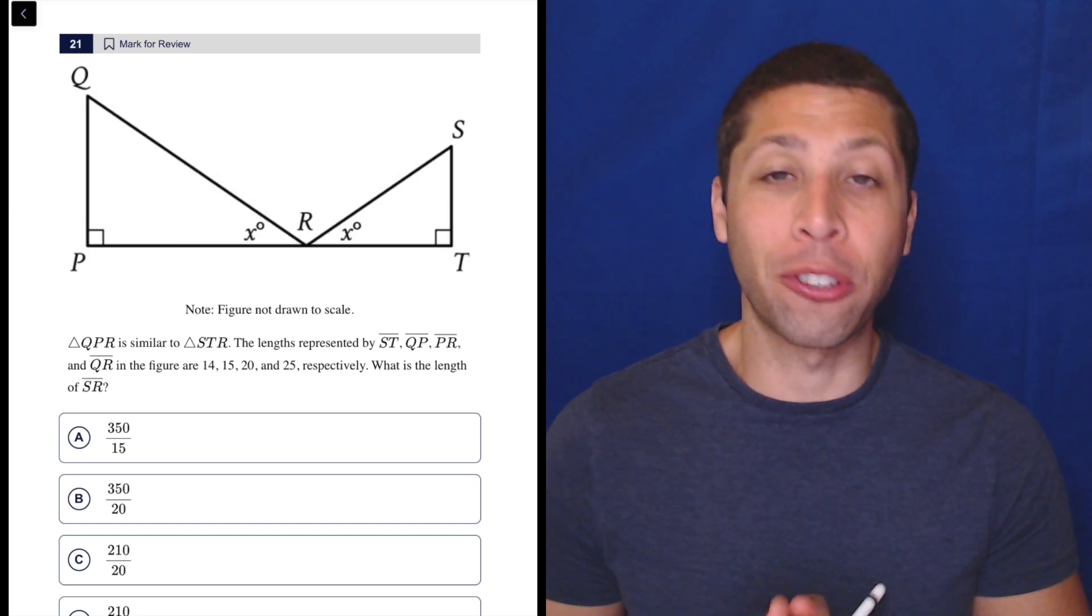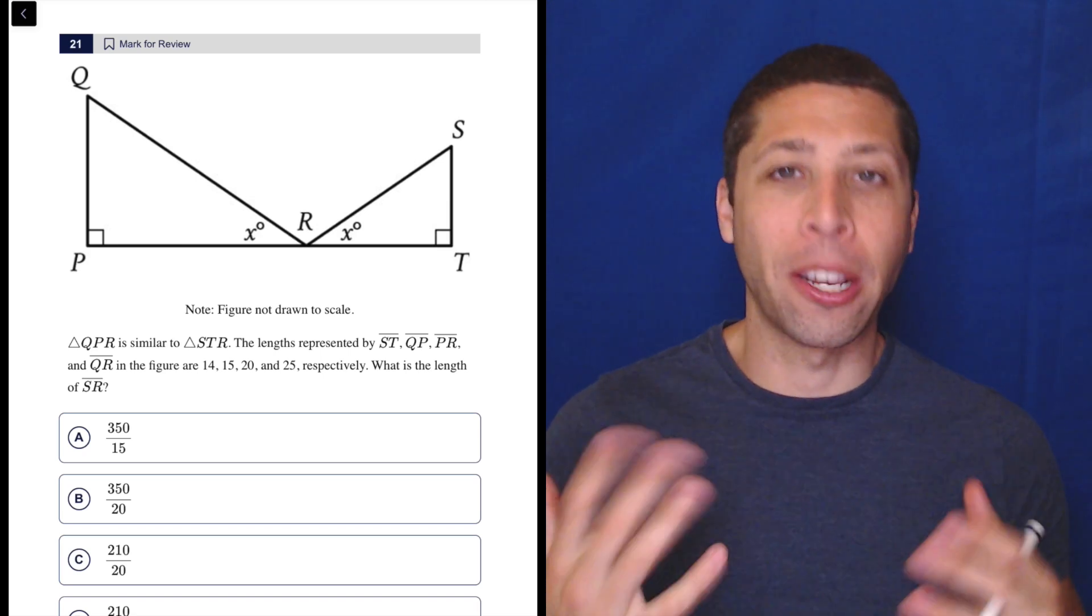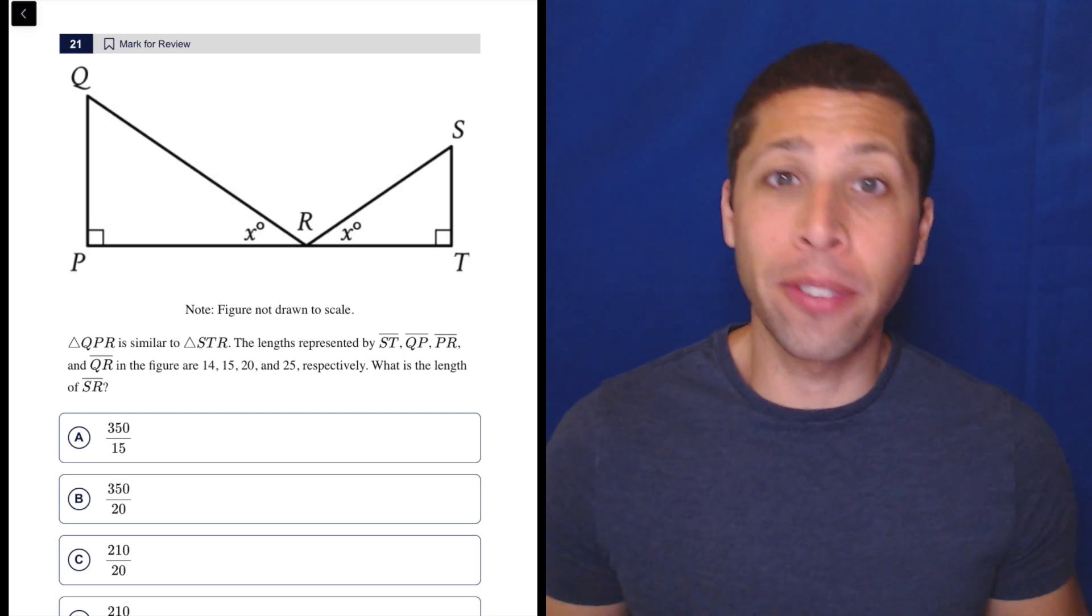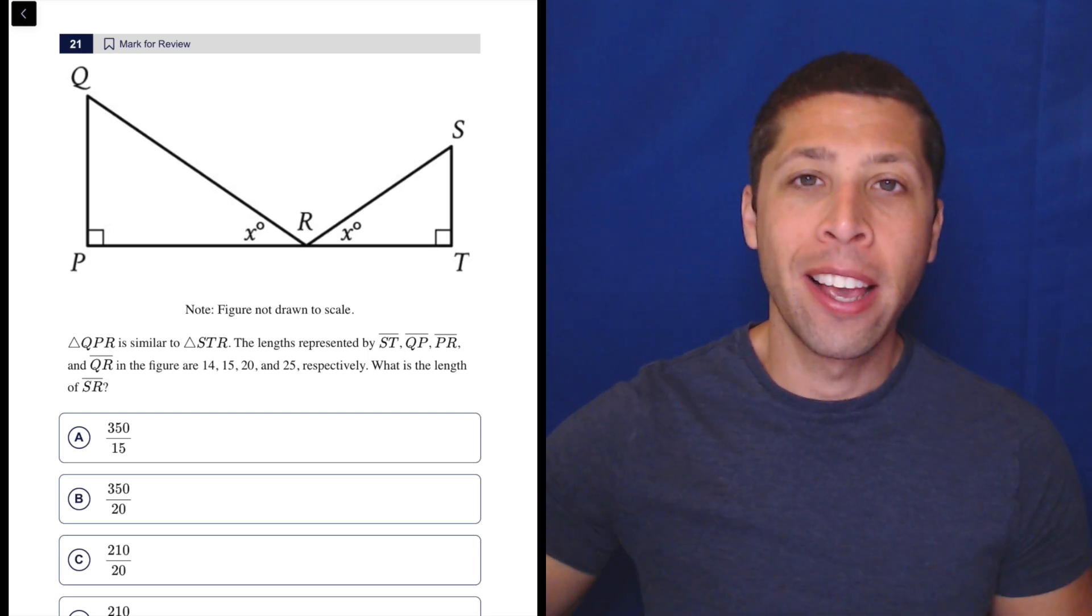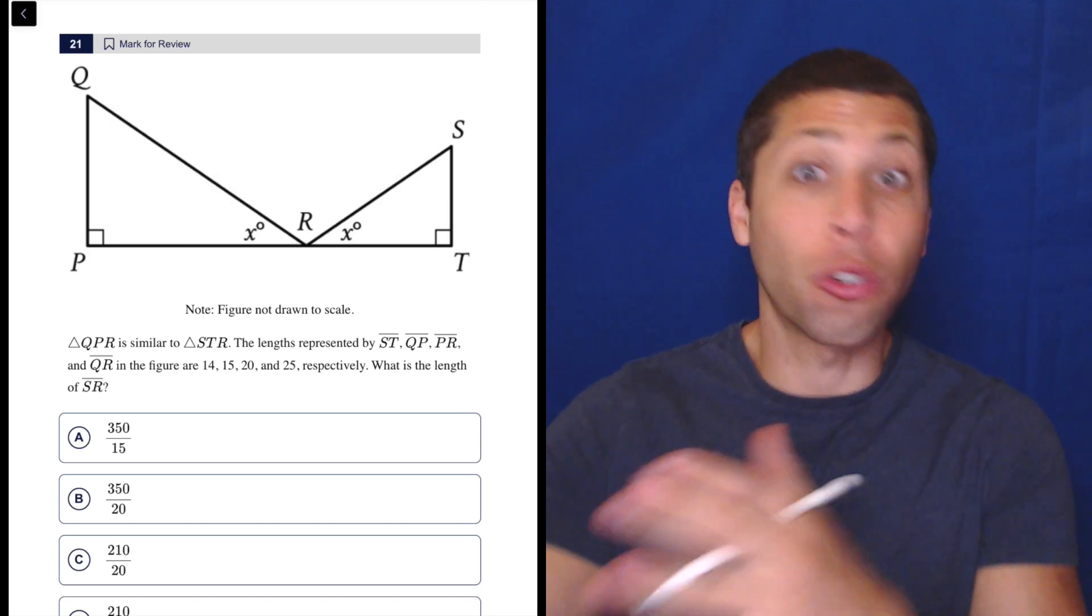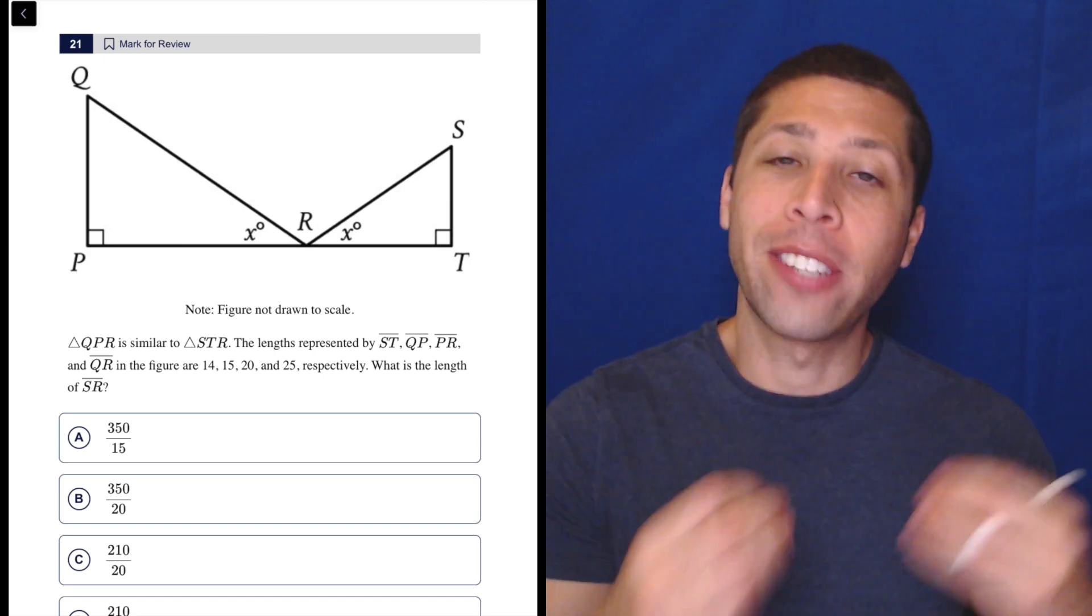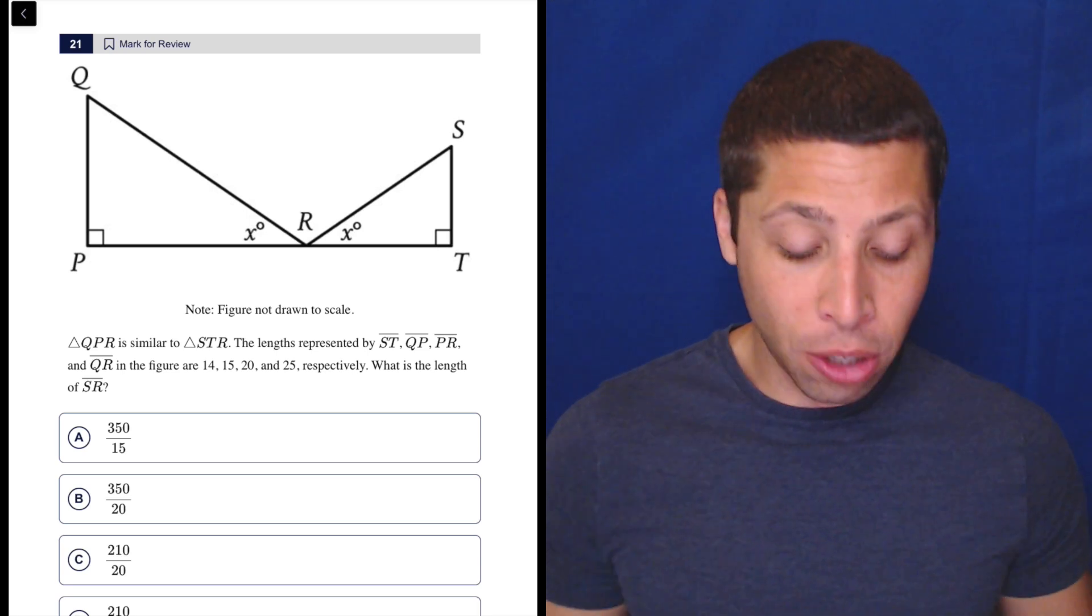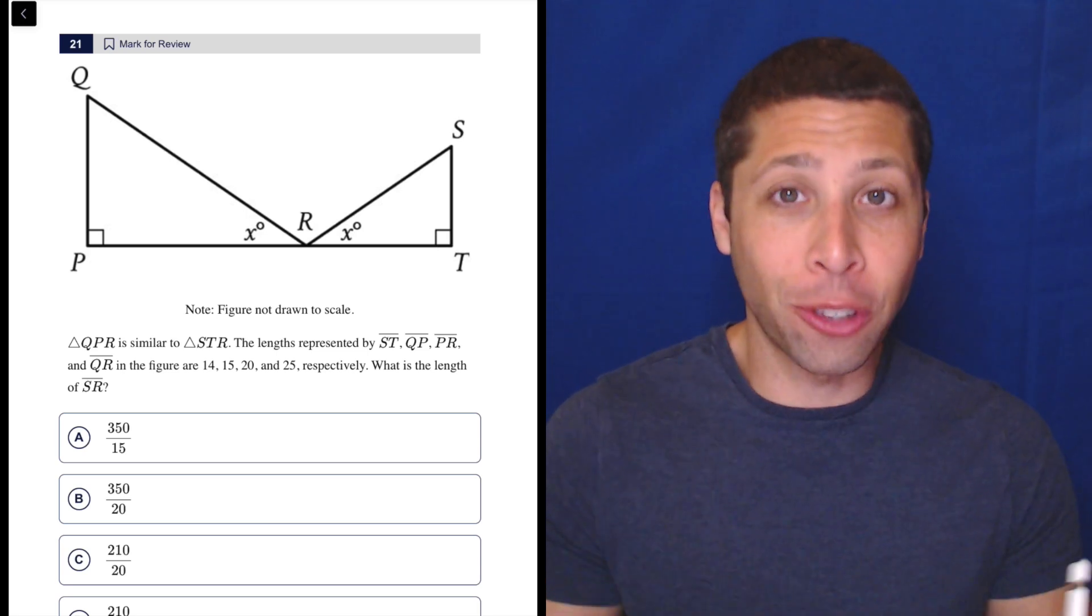But we also need to make sure that we are using our scratch paper and drawing this out, basically following instructions. And I do think that that is one of the things that the digital SAT has added on is that they know we don't have the ability to just draw on the picture anymore. So they're testing your ability to take information and sort through it. So you need to redraw this picture on your scratch paper.